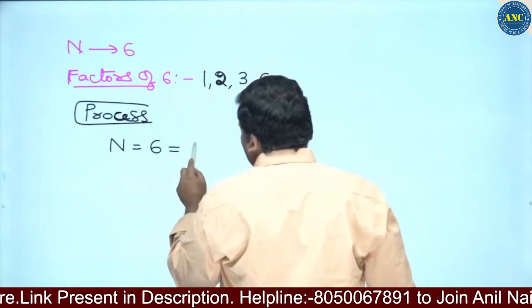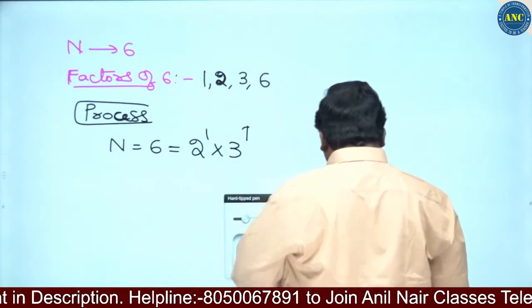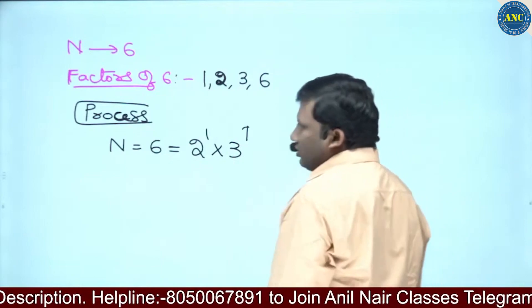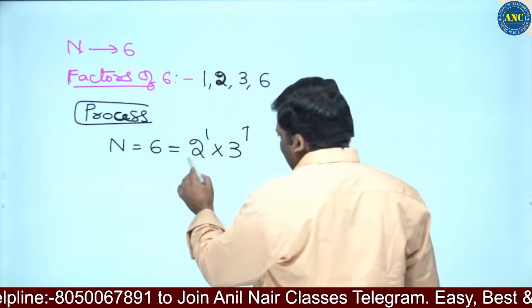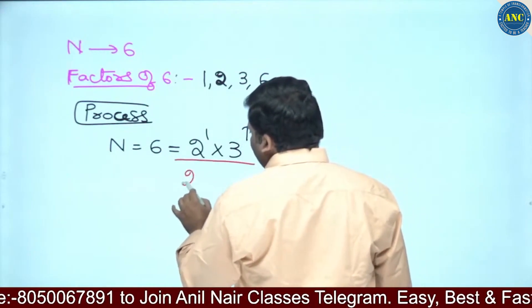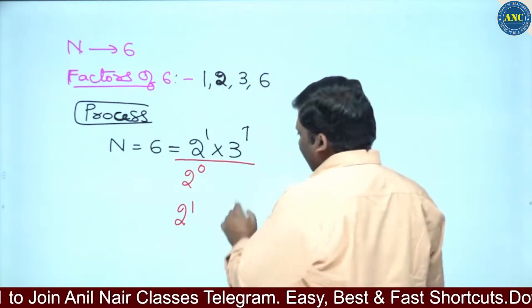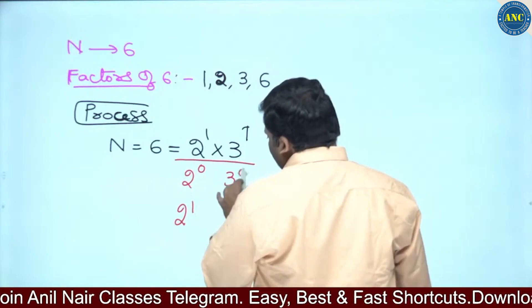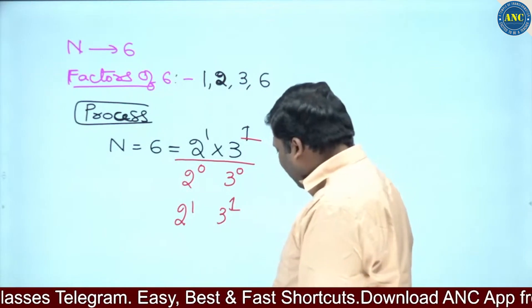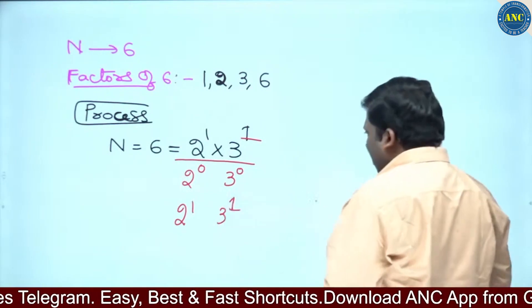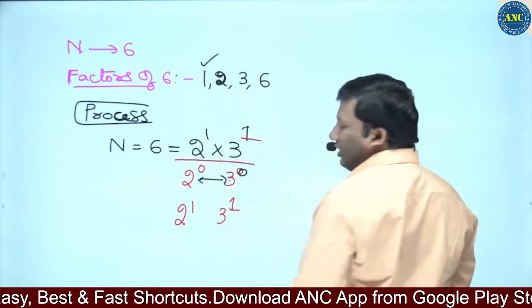Step 1: write the number as a power of prime basis. 6 can be written as 2¹ × 3¹. When finding factors, I start from power 0 because 1 (which is any base to the power 0) is always a factor. So I write all powers of 2 from 0 to 1, because 6 contains 2 to the power 1. Similarly, I write 3 power 0 and 3 power 1. So: 2⁰ × 3⁰ = 1 × 1 = 1, which is a factor of 6.